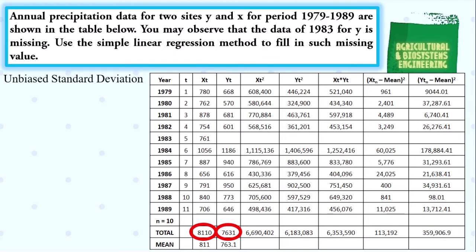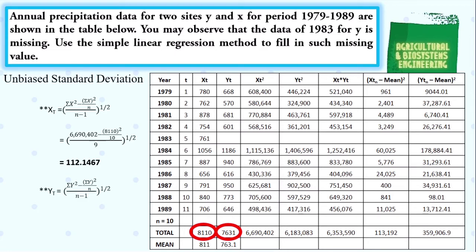Next, let us solve for the unbiased standard deviation using the values encircled in red and the corresponding formula. Substituting the values, we simply solve, giving us Sxt of 112.1467. Next, for the value of Syt, we substitute the values and solve, obtaining Syt equal to 199.9630.